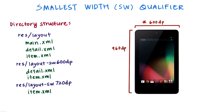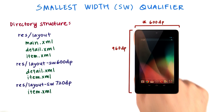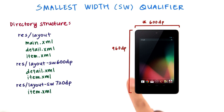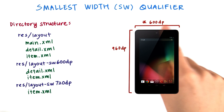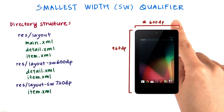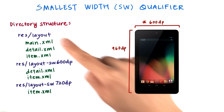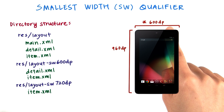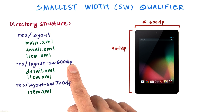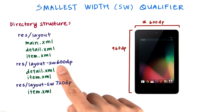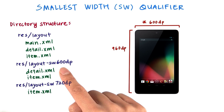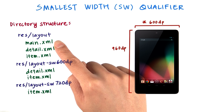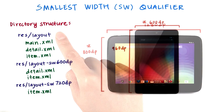For the Nexus 7 2012 version, the dimensions are 600dp by 960dp. Of the two sides, 600dp is the smaller width, so we compare this against the folder names. It turns out that the smallest width is greater than or equal to 600dp, so for the detail and item layouts, we pull them from this folder. Now the main.xml file is not declared in this folder, so we fall back to a less specific folder, which is the base layout folder.